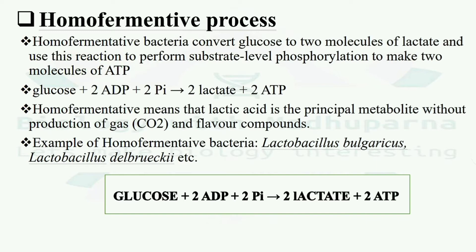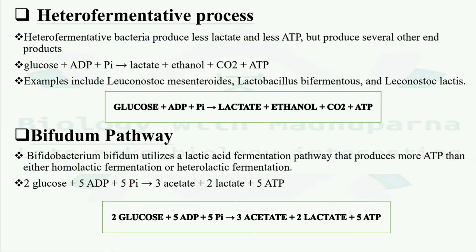Examples of homofermentative bacteria include Lactobacillus bulgaricus and Lactobacillus delbrueckii. In the heterofermentative process, bacteria produce less lactate and less ATP but produce several other end products. The reaction is: one glucose molecule plus one ADP plus one inorganic phosphate yields one lactate, one ethanol, CO2, and one ATP.